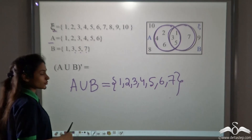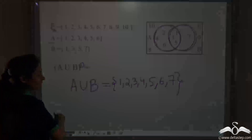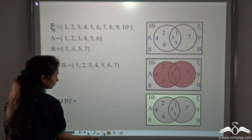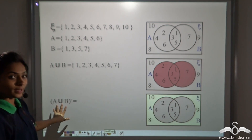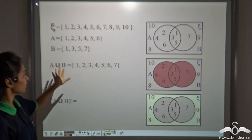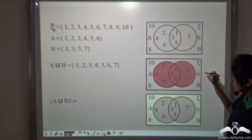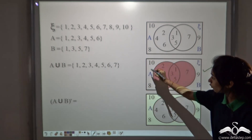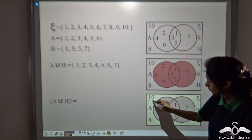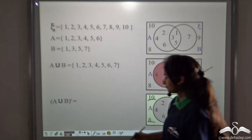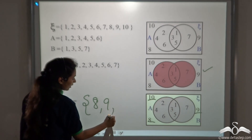We do not repeat elements when writing the union. Now we have to find A union B complement — the set of elements not in A union B. The highlighted leftover portion outside A union B gives us 8, 9 and 10.